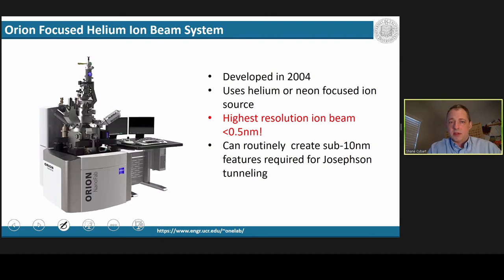In 2004, Carl Zeiss with a few other research groups developed the Orion helium ion beam system. And this system uses helium or neon to create a focused ion source that's much higher resolution than any other ion beam system on the market. It can focus the source all the way down to just half a nanometer, and my group showed that it can routinely create sub-10 nanometer features in YBCO, which are crucial for high-quality Josephson tunneling.